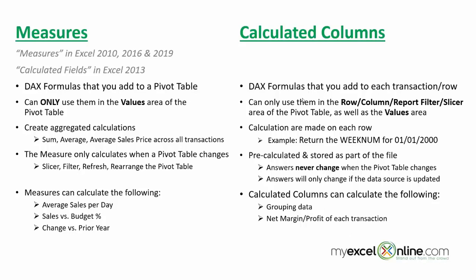That's when you use a calculated column. You can use calculated columns in rows, columns, report filter, slicers, and also in the values area of the pivot table. The calculations are made on each row. For example, if you had a column with all the dates and in your new calculated column you want to return the week number — you put in the week number formula, reference a cell, press enter, and it gives you the week numbers for every transaction, not just the row you're in. It gives you values for all transactions on a transactional basis.